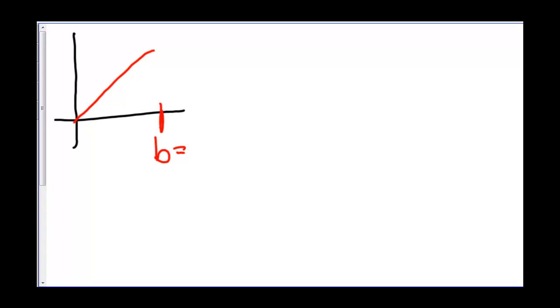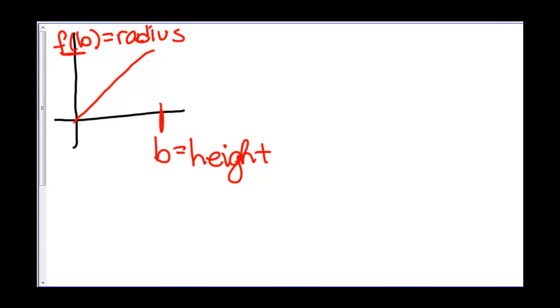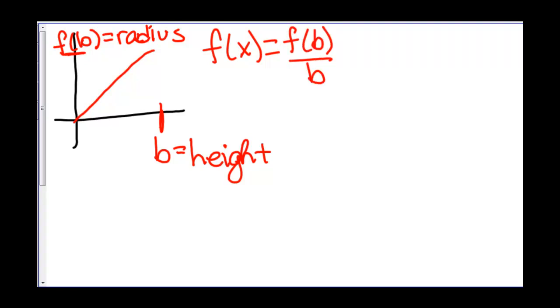So let's take a closer look at this cone. We know our function is a line. We're going to call this point b, which we know in our cone would be equal to our height. And we're going to call this point f of b, which we know would be equal to our radius in a cone. And this function here is equal to a slope, which in this case we could call f of b over b, because the slope here is the change in y — f of b minus 0 — over change in x — b minus 0. So that gives us f of b over b times x, and the y-intercept is at 0, 0, so we don't have to worry about that.